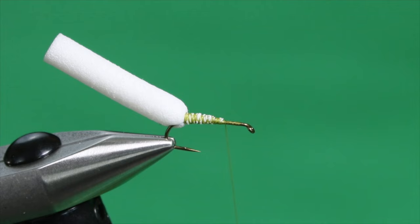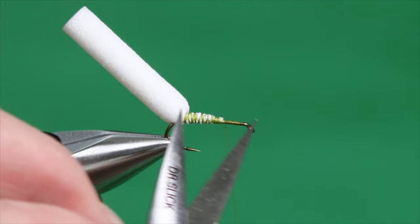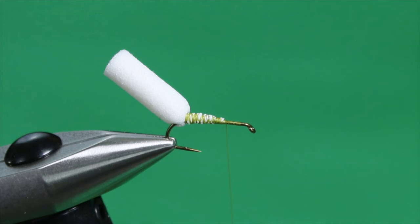So now we're going to trim this. And we want our foam post about the same length as the shank. It's not super critical, but that's the basic proportions. You can trim this on the water if it's a bit too long. But this sticks right up out of the water.